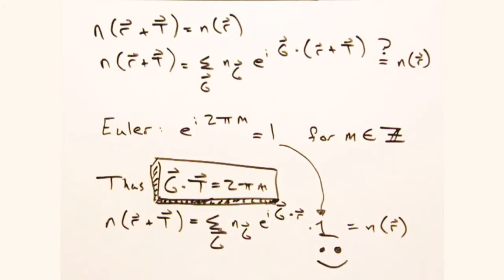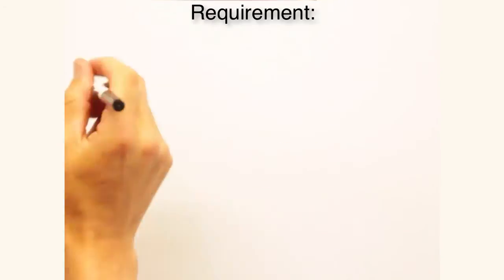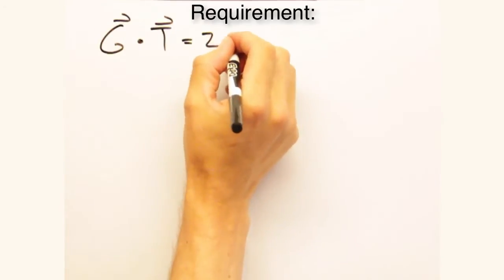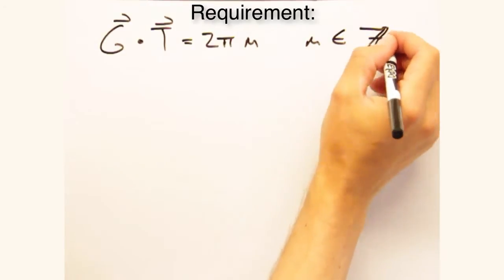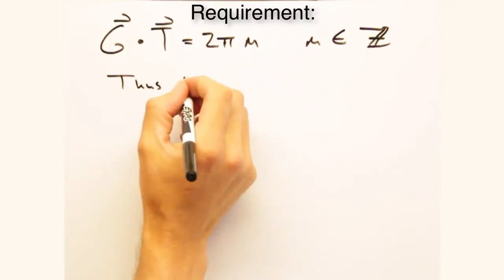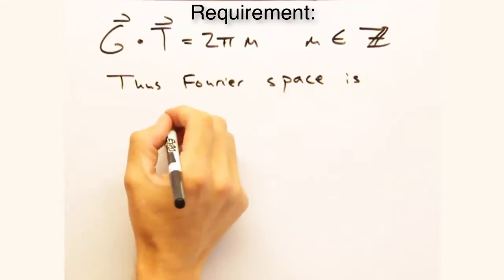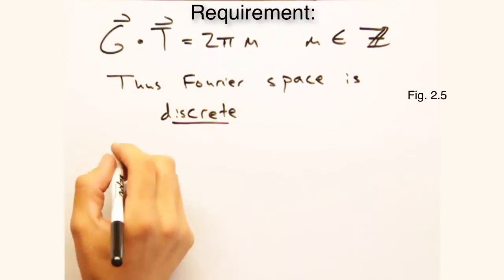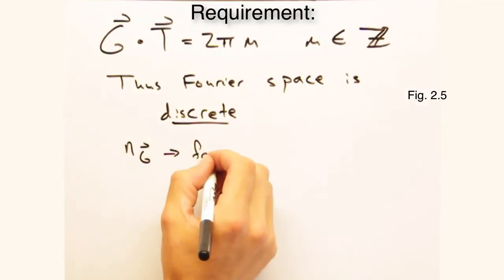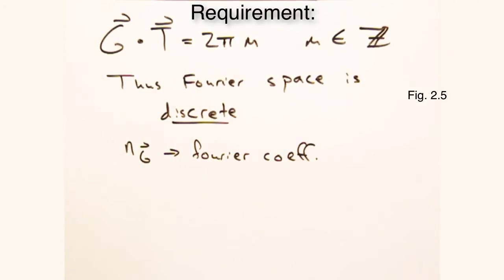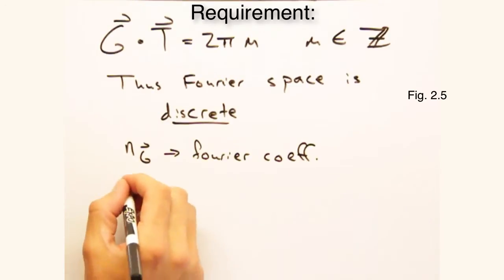Only a subset of points contained in the sum satisfies translational symmetry. Thus, like the lattice in real space, we can think of Fourier space as a set of discrete points. And each point has an associated Fourier coefficient, n sub g, that determines that particular point's contribution to the total scattering density.